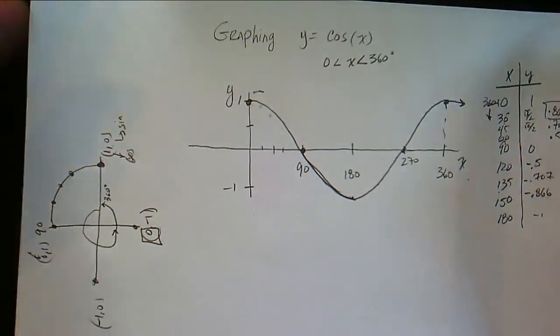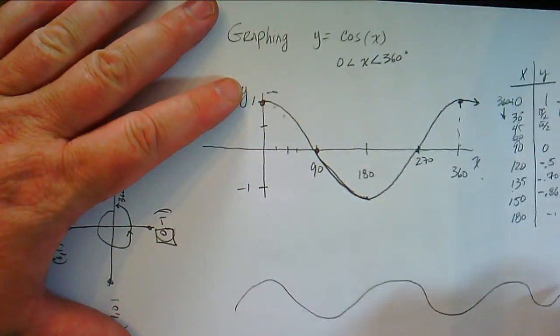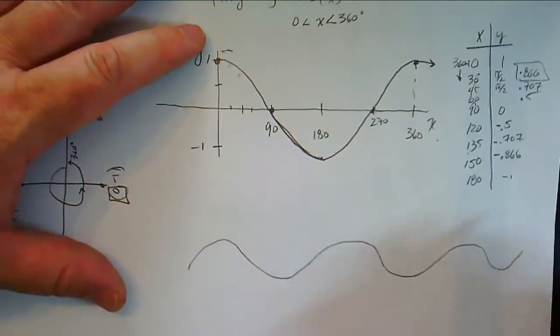And that's why if you look on a graphing calculator, you end up seeing this curve kind of looks like this, and it goes forever in both directions, this wave-looking thing, right?